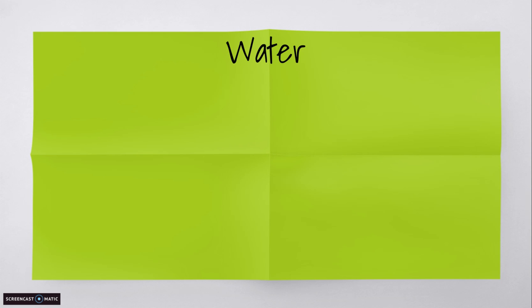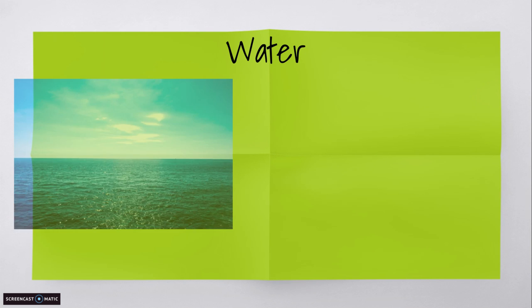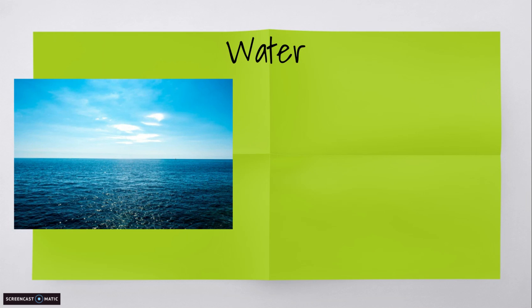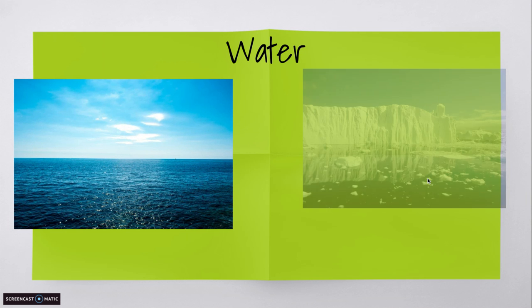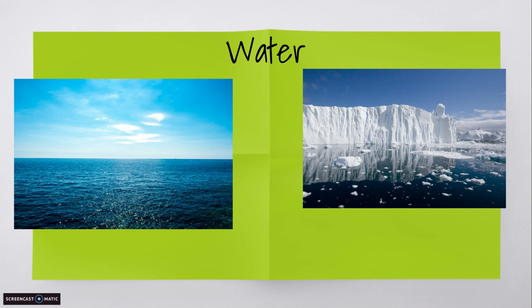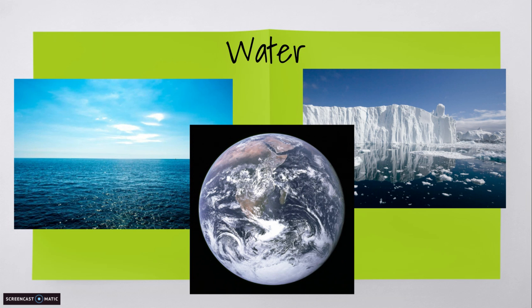Water. Most of Earth's surface is covered by some form of water. Oceans cover nearly three-fourths of the Earth's surface. Also, around the poles, we have vast sheets of ice — also water. Even from space, you can't even see a lot of parts of Earth because they're hidden behind clouds, which are made up of tiny water droplets. So there seems to be so much water, it's really hard to believe that it's a scarce resource in much of the world.